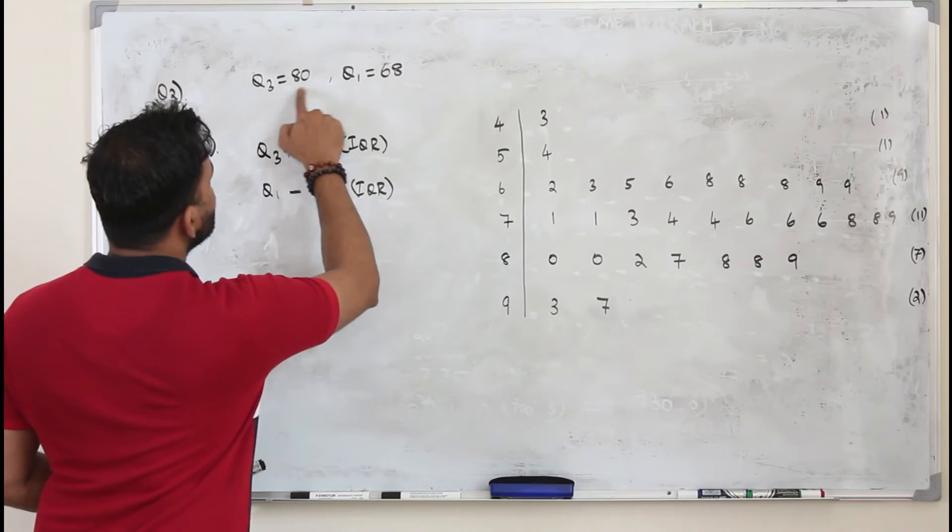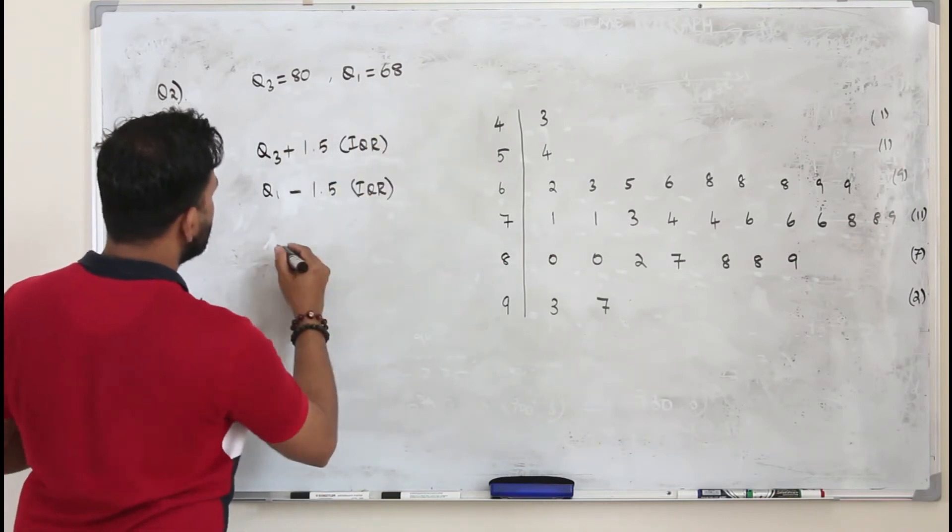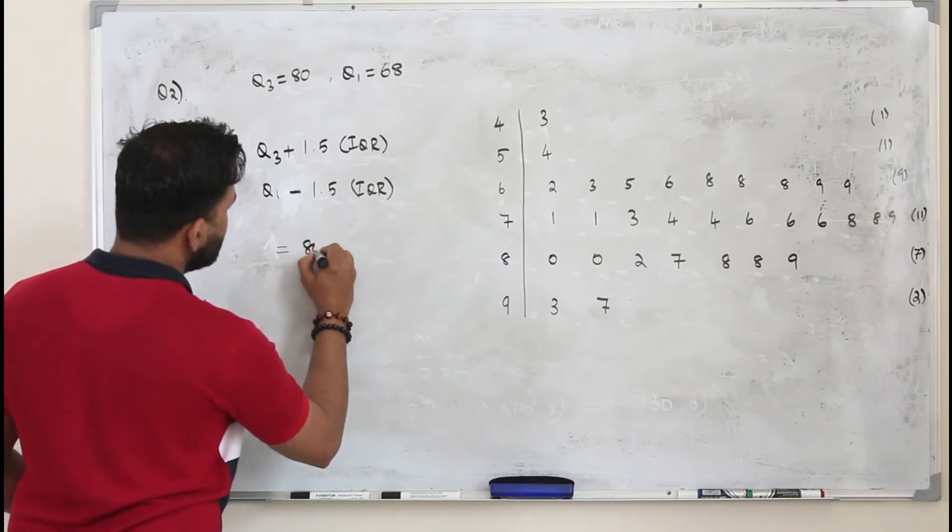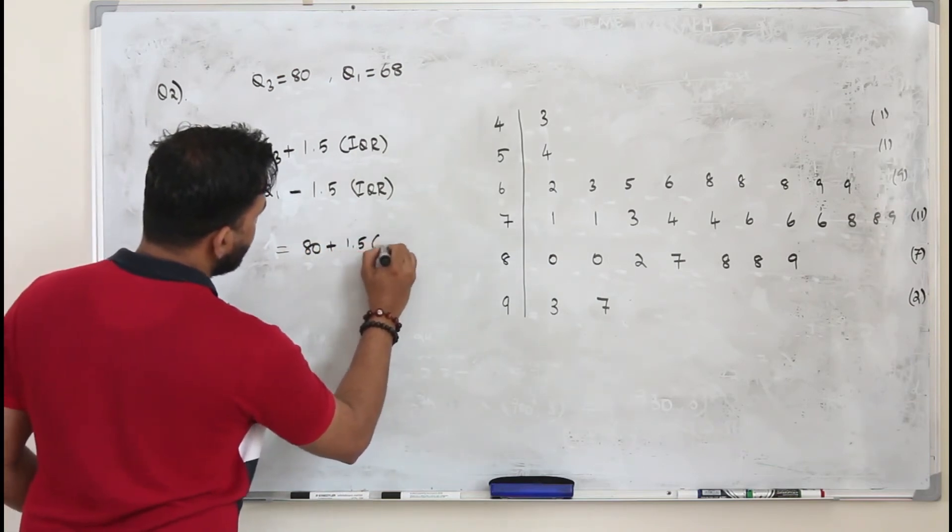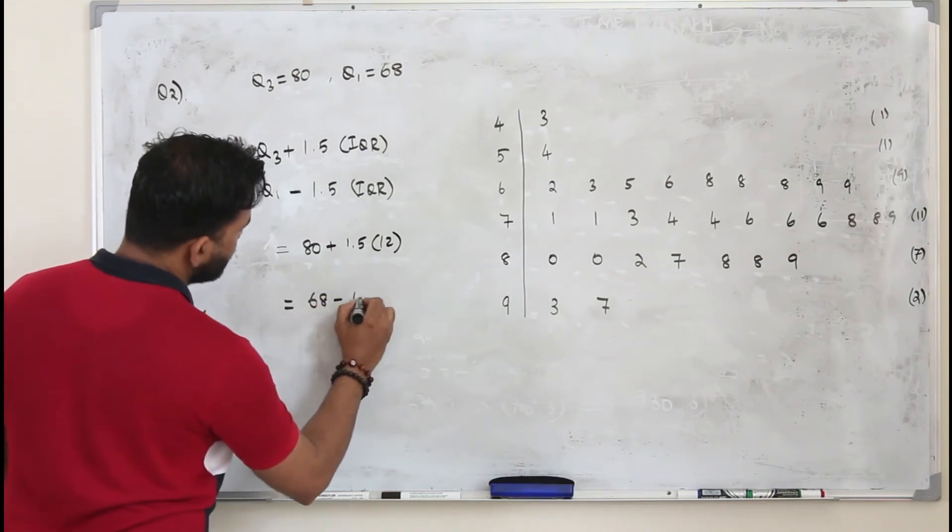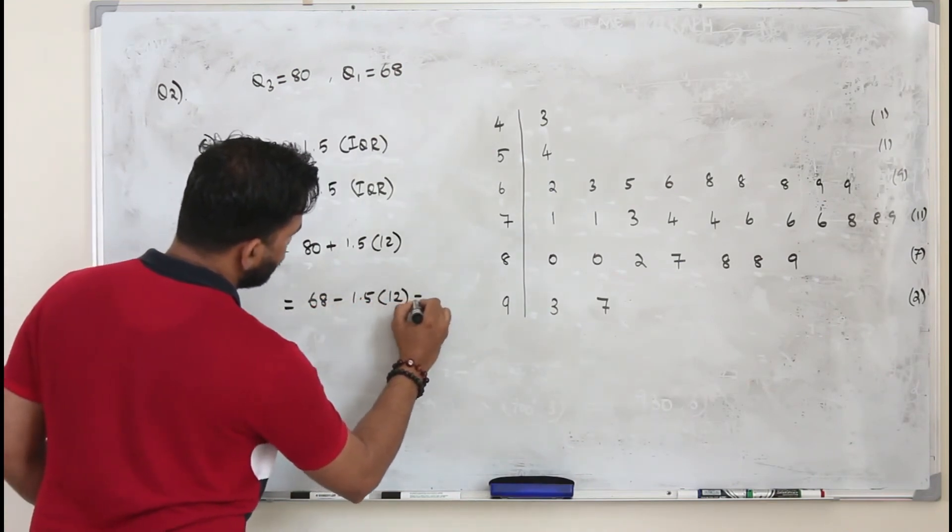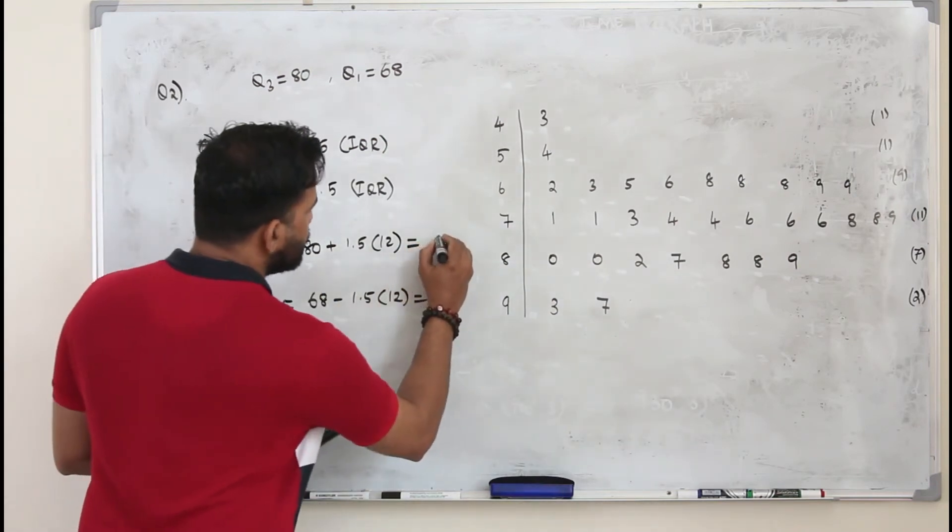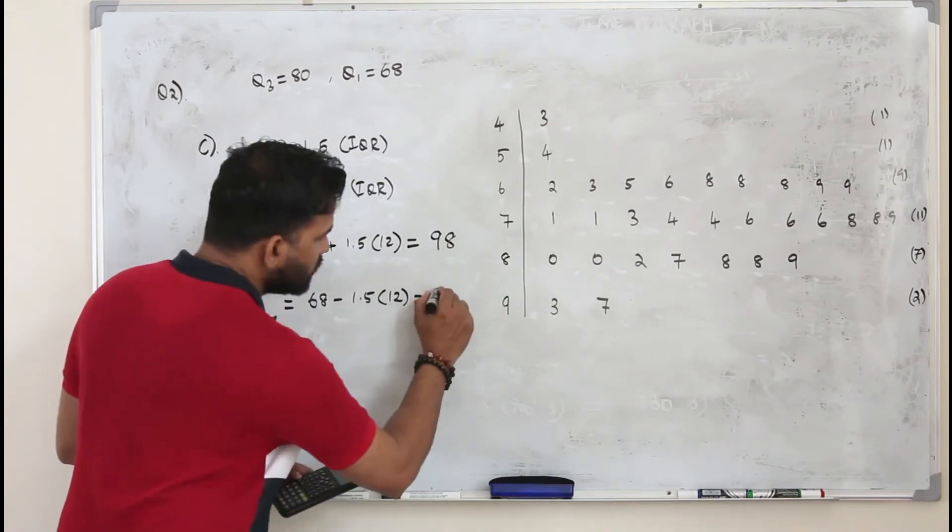So we know IQR is Q3 minus Q1, which is 12. So the first value is Q3, which is 80 plus 1.5 times IQR, plus 1.5 times 12. And here it's 68 minus 1.5 times 12. Let's calculate this value first. This is 98. This is 50.